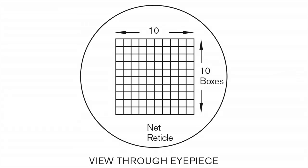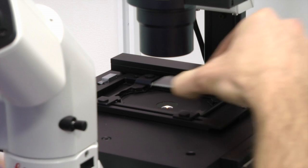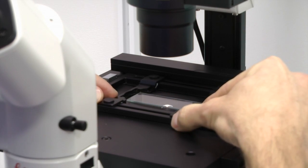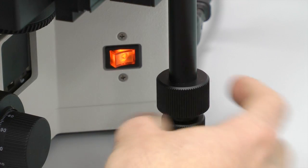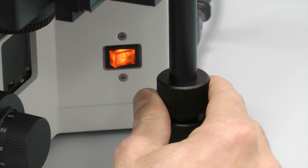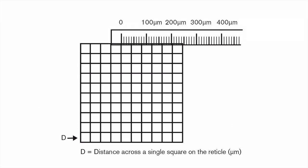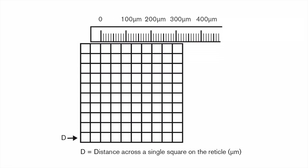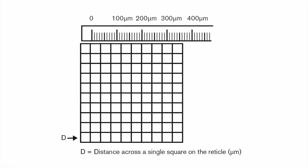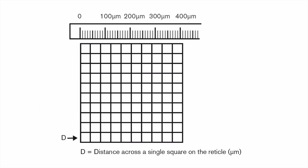This is your view through the eyepiece. The next step is to make a calibration — in other words, to determine the sizes of the boxes in the grid. Place the stage micrometer on the microscope stage and line it up so that one of the large lines is to the left edge of the reticle matrix. Measure the distance across all 10 boxes of the reticle and divide that number by 10 to get the value of d, the distance across a single box.